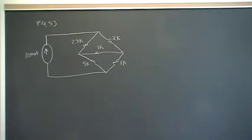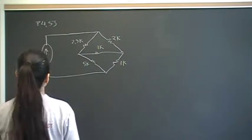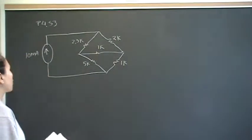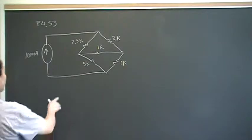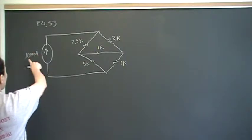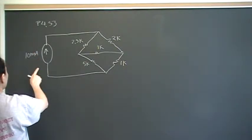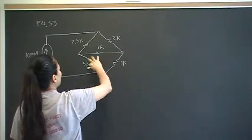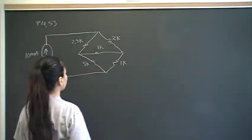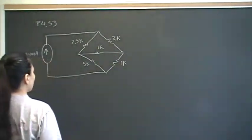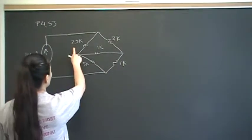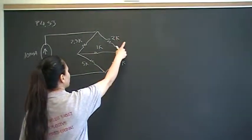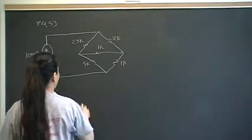Hey you guys. This problem is number 63 from the section on node versus mesh. We've got a circuit that has a 10 milliamp independent current source connected in parallel with resistors: 2.5k, 1k, 2k, 1k, and 5k.